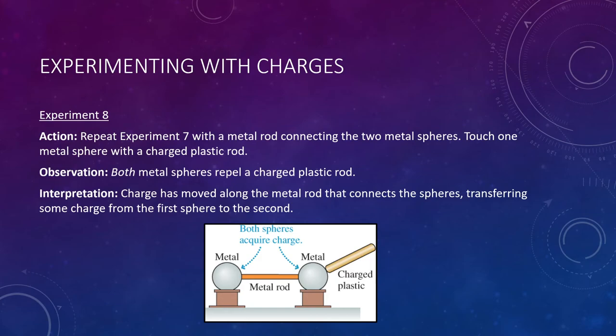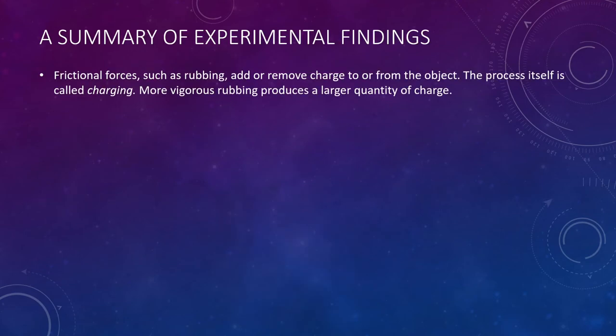These eight experiments, even though they're very basic in nature, have just taught us an immense wealth of information. Let's summarize all of this. First, processes such as rubbing, which is a frictional force, add or remove charge to or from an object. And that process of doing that rubbing is what we call charging. We then saw that the more vigorously you do this charging process, or the rubbing, the larger quantity of charge that's present. More charge is present if you rub the objects more vigorously.